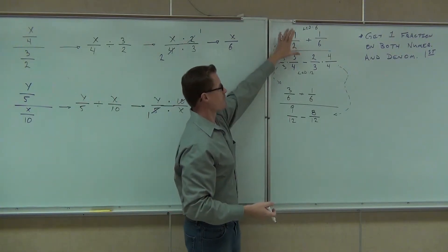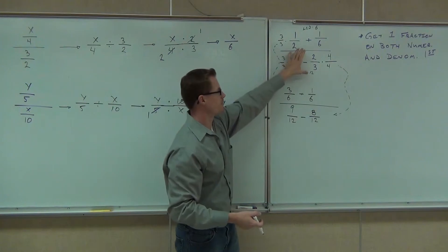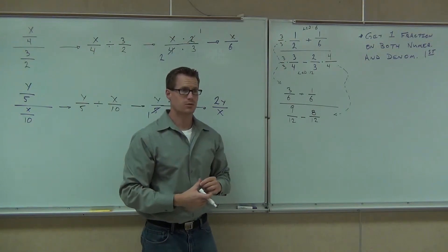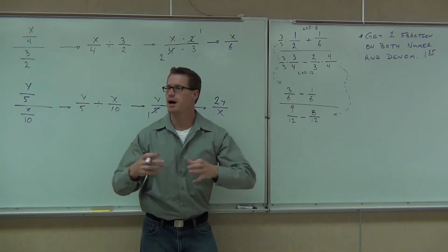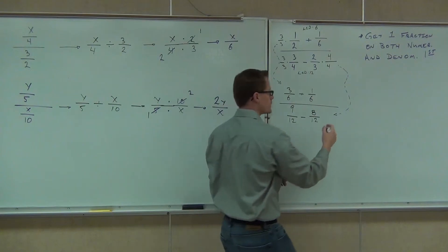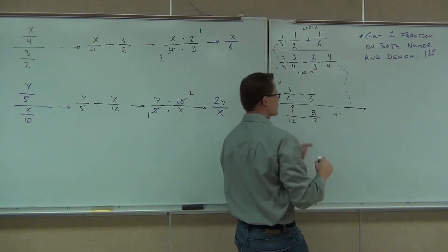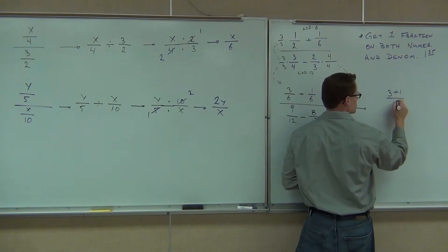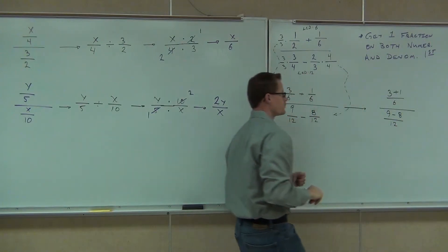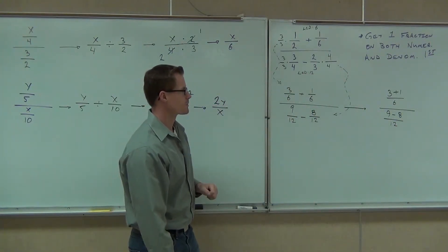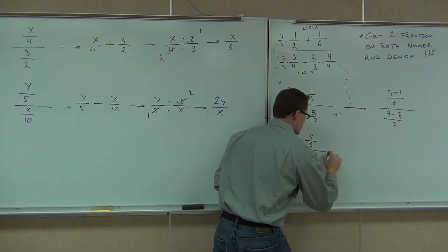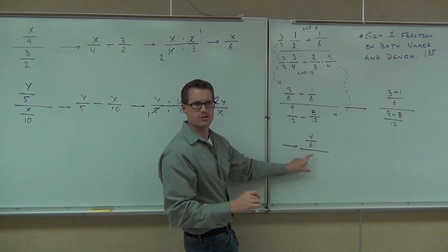So we've changed our numerator into three-sixths plus one-sixths, and we've changed our denominator into nine-twelfths minus eight-twelfths. Are you okay so far? We're almost done — we're almost ready to make this a division problem. The only thing we've got to do is combine these fractions. This is just like adding fractions, this is just like subtracting fractions. So I know I'm going to have three plus one over six, and nine minus eight over twelve. What's our top fraction going to be? Four-sixths. What's the bottom fraction? One-twelfth.